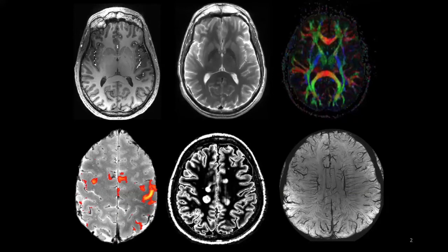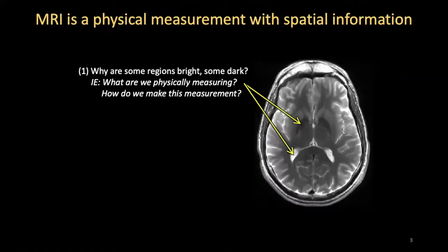There's a huge range of contrast types, both anatomically relevant as well as functionally relevant. And so for this reason, MRI has been really powerful clinically as well as in research. MRI is itself a physical measurement, and I should back up and say that I have to thank Patrick McDaniel for several of these slides — he's given this talk many years previously and I borrowed several of his slides.